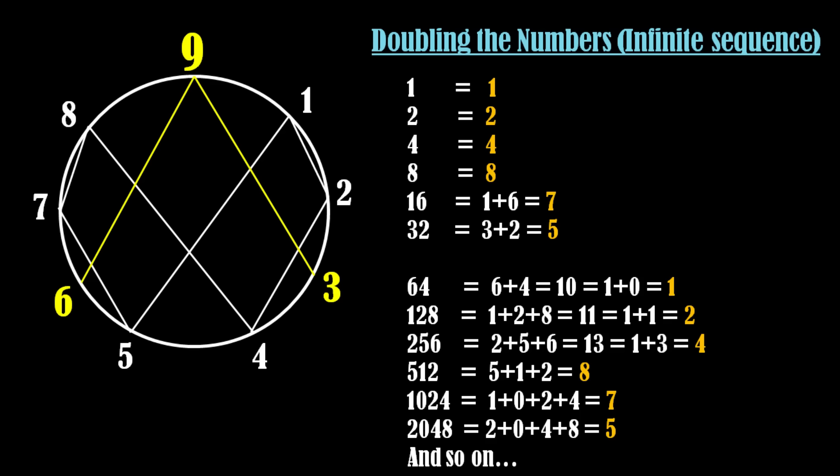This final single digit is called the digital root of the number. So here you can see the digital roots of these numbers. Now observe the digital roots shown in orange color. Can you observe a pattern here? You will see a repeated sequence of numbers 1, 2, 4, 8, 7, 5.